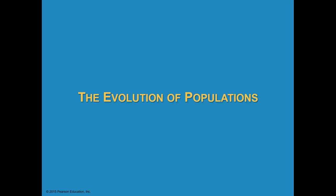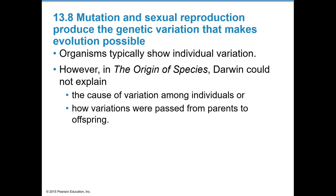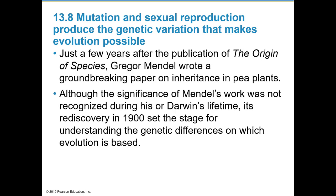Transitioning to the evolution of populations — organisms typically show individual variation. However, in the Origin of Species, Darwin could not explain the cause of variation among individuals or how those variations were passed from parents to offspring. Just a few years after publication, Gregor Mendel wrote a groundbreaking paper on inheritance in pea plants. Mendel's work was not recognized during his or Darwin's lifetime; its rediscovery in 1900 set the stage for understanding the genetic differences on which evolution is based.